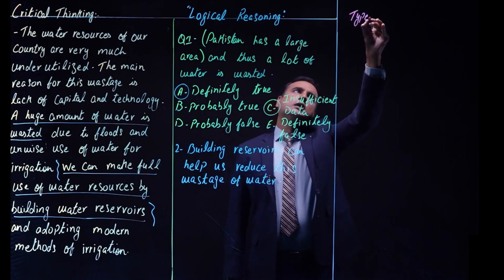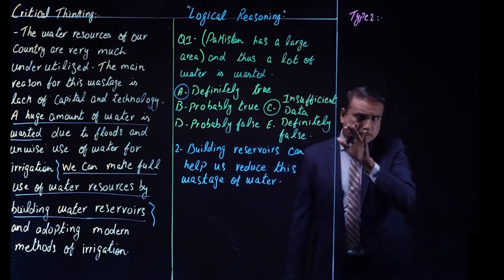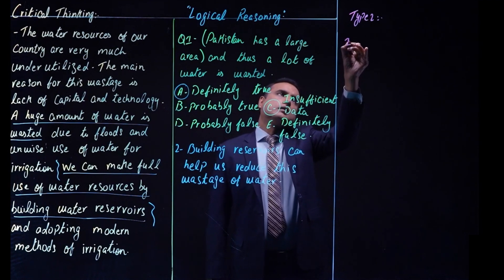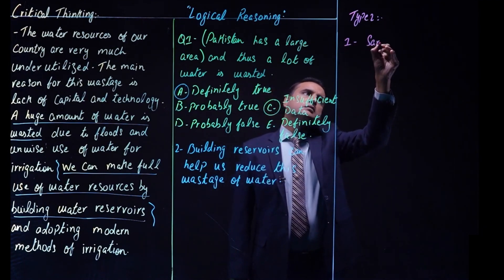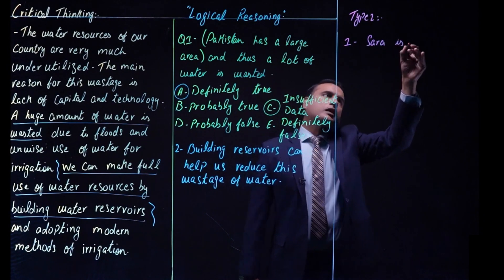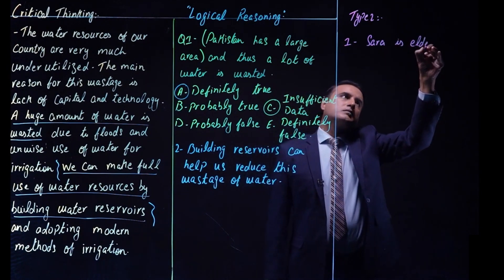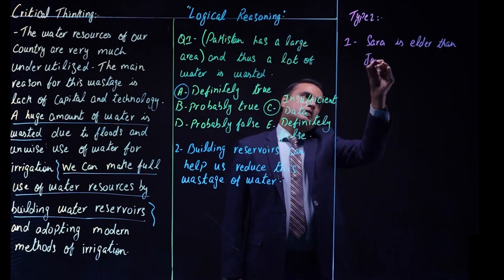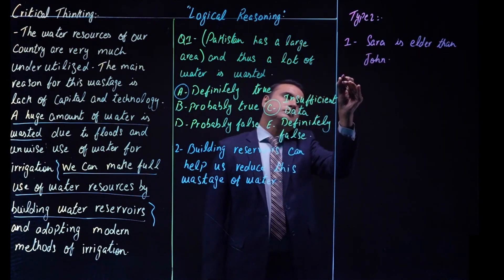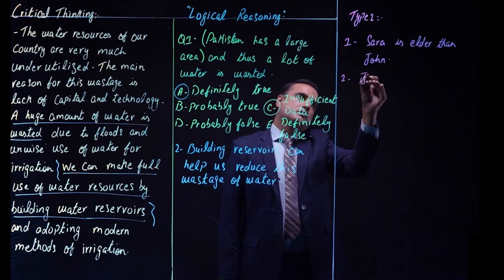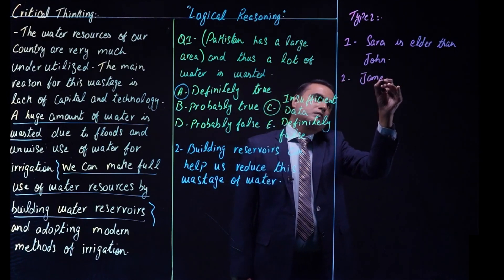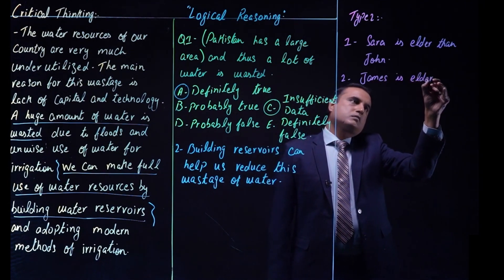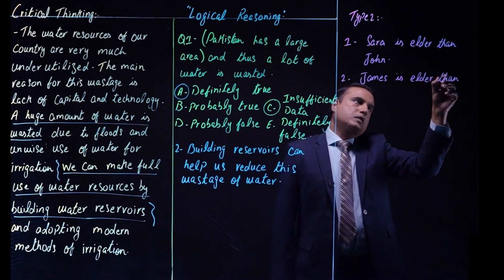Another way in which these questions can be asked is that you will be given a set of statements, and on the basis of the first two statements you will be asked to evaluate the third one — whether this statement is true, false, or uncertain. This is type two of critical thinking questions. The first statement is: 'Sarah is elder than John.'